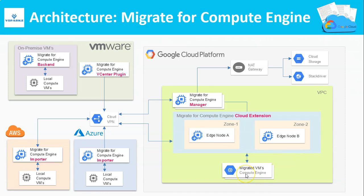Cloud extensions should be created before starting the actual migration of VMs. Once you start the migration in the Migration Manager, it will create a source caching VM in the concerned source location. This source caching VM is called a backend in terms of on-premises VMware environment, and it is called an importer in terms of AWS and Azure. These backends and importers cache the source machine data and stream it to Google Cloud. The worker nodes in Google Cloud utilize the streamed data from the backend or importer and create the migrated VMs. Once the migration completes, the backend or the importer will be automatically terminated.